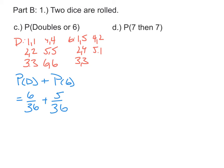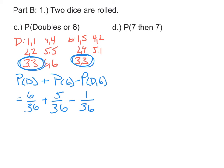We do have one problem here: the 3 and 3 appears on both of these lists. So we need to subtract off the probability of getting a double that is also a 6 — that 3 and 3. There's only one outcome that's both a double and a 6 out of the 36. So 6/36 plus 5/36 minus 1/36 leaves us with 10 over 36. Simplifying, that makes 5 out of 18.